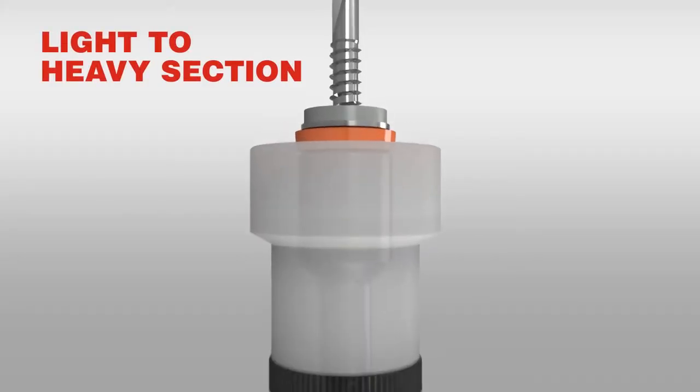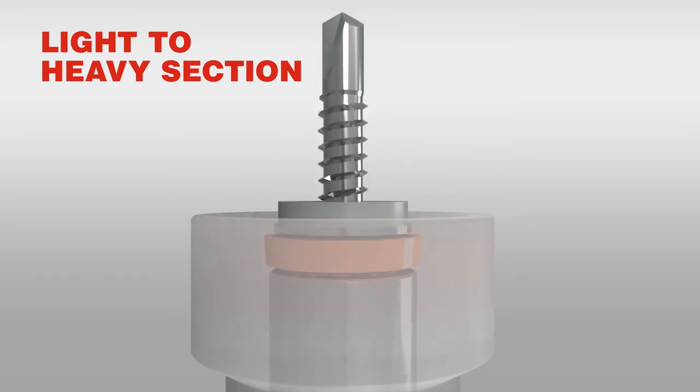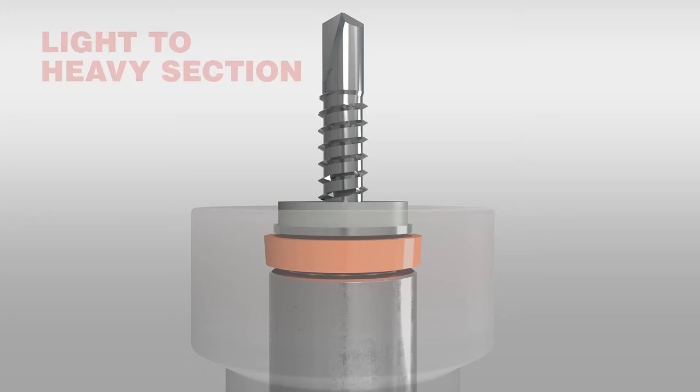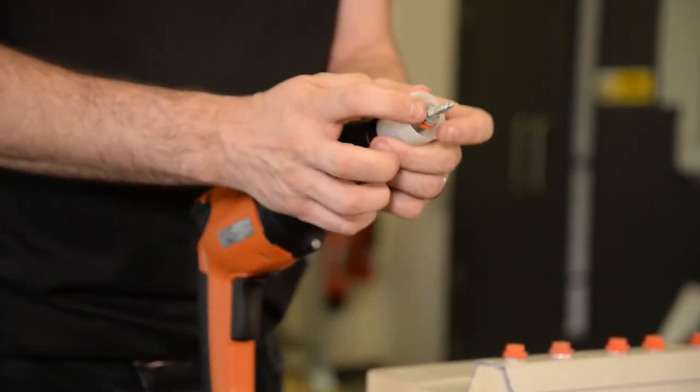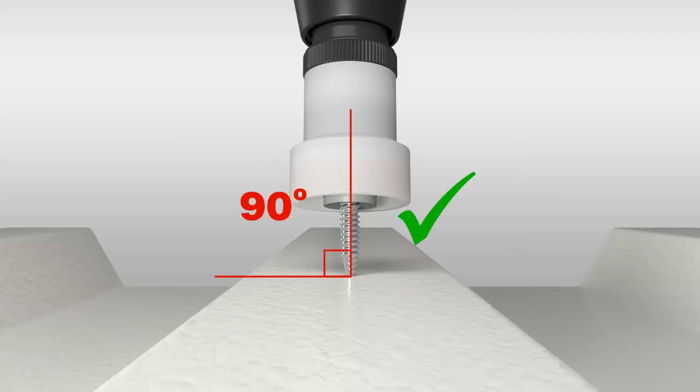When we're fastening thicker materials, typically light to heavy section metals, the setting is adjusted to account for higher resistance. Happy with the setting? Next step is a test installation.